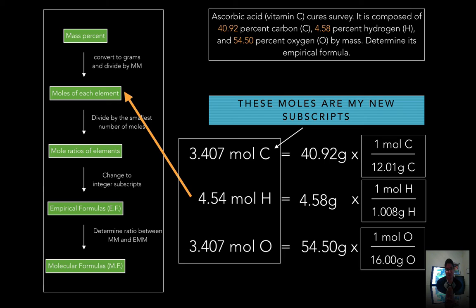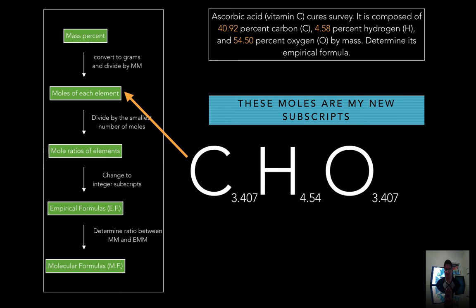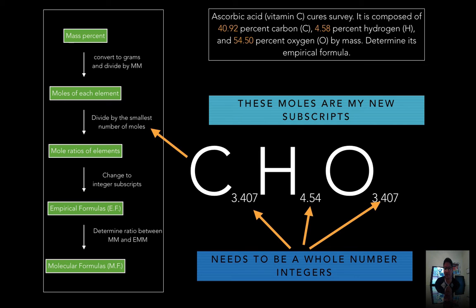I've now gone from mass percent to moles of each element. You can see the formula with subscripts: C₃.₄₀₇H₄.₅₄O₃.₄₀₇. These moles are actually my subscripts for this particular molecule. However, there's a problem — these numbers are not whole numbers; they're messy decimals. So my next step is to divide by the smallest of these mole values to convert them into whole number integers.